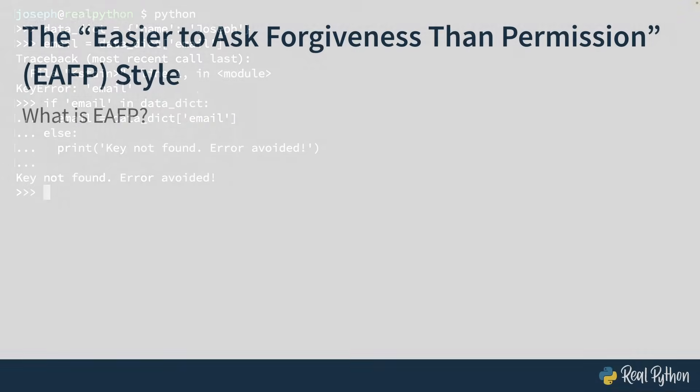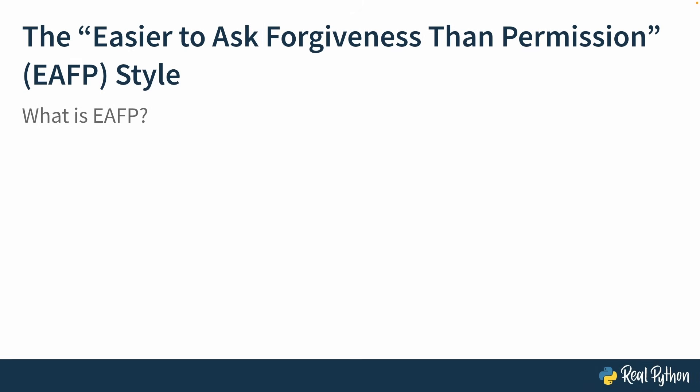Next up, you'll dive into the alternative style: EAFP — easier to ask forgiveness than permission. If you are now or have ever been a teenager, I'm sure it's familiar to you. Basically, you're going to go out and do what you want, throw caution to the wind, and if you make mistakes — that is, if you encounter an error — you'll handle it after it happens. Another way to put that: if you get caught sneaking out after curfew, you better hope you have forgiving parents.